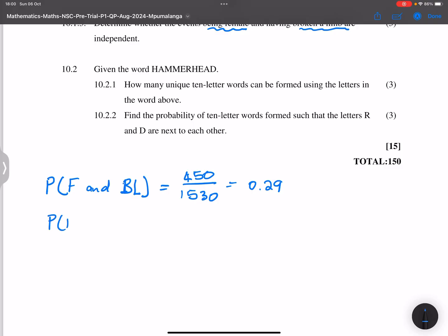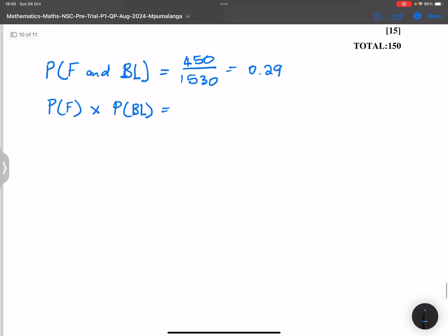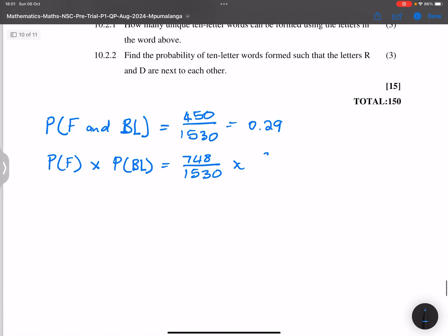But now let's compare it with the probability of finding a female multiplied by the probability of finding someone with a broken limb. So how many females in total were there? So the total number of females is 748. So that's 748 over 1530 multiplied by the probability of having someone with a broken limb. So in this case, how many of them had a broken limb? That's 913 people.